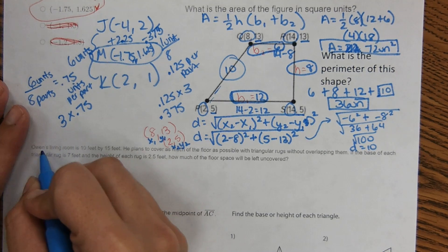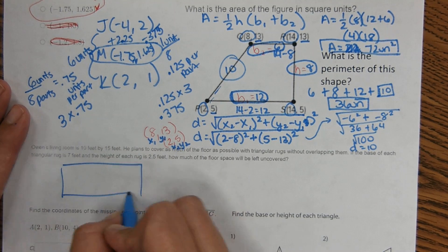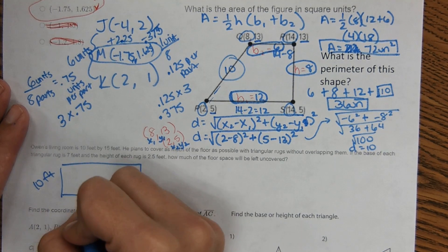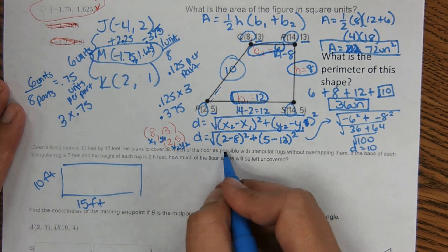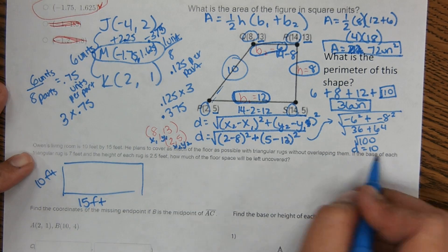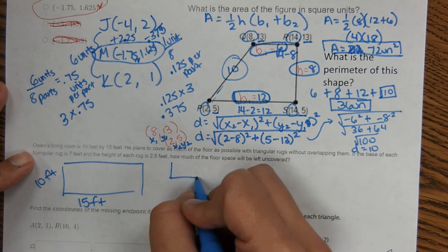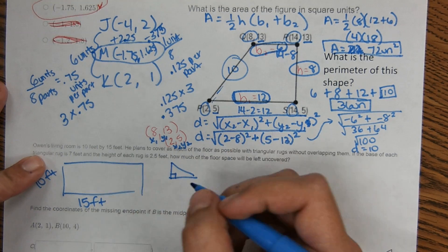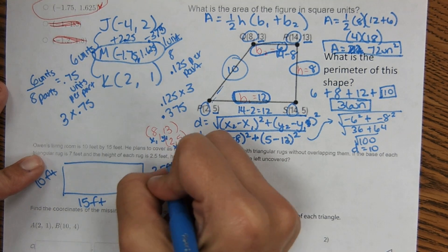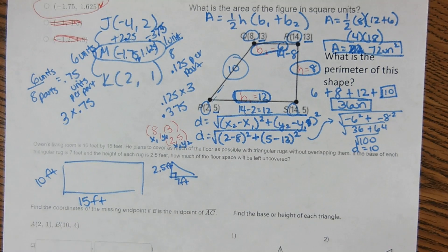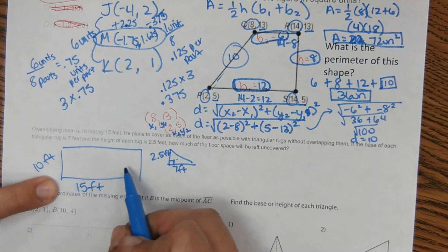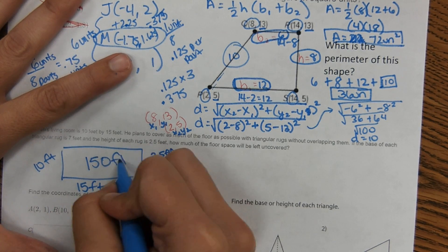Okay, so the next one, it said Owen's living room is 10 feet by 15 feet. He plans to cover as much of the floor as possible with triangular rugs without overlapping them. If the base of each triangular rug is 7 feet and the height is 2.5 feet. How much of the floor space will be left uncovered? So we have to see how many of these would fit into this area. So this area is 150 feet.